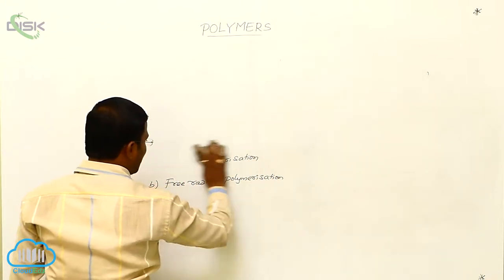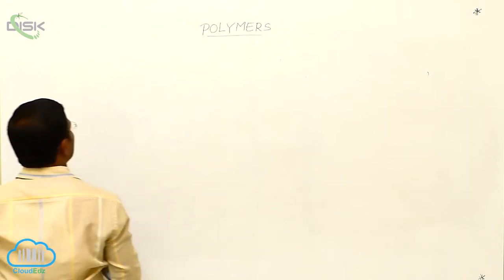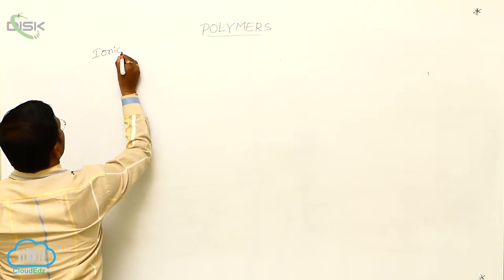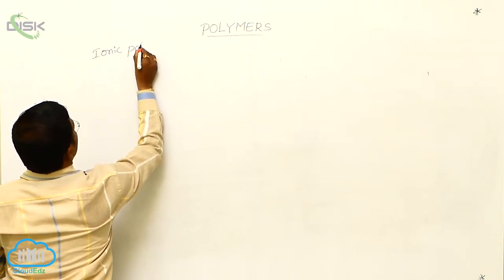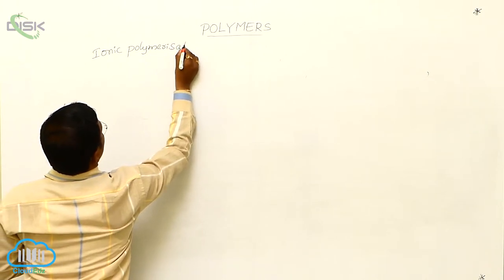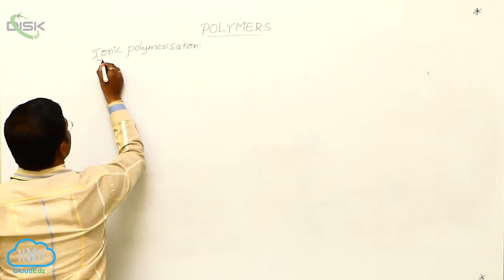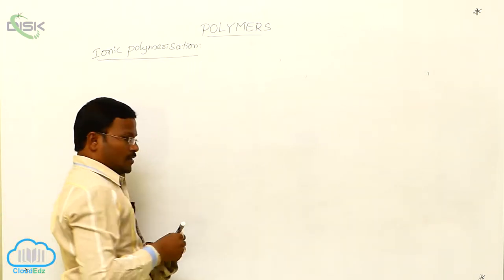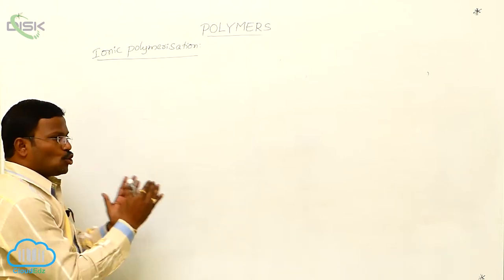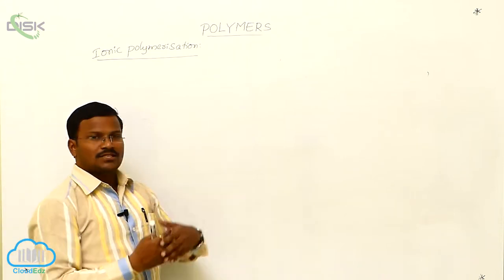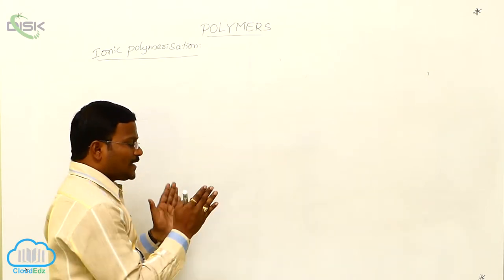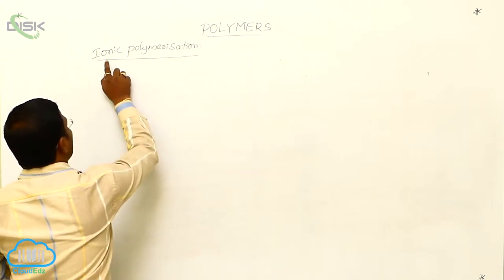The major heading for this topic is ionic polymerization. The name itself suggests that when one monomer reacts with another monomer, the resulting intermediates during the polymerization are ionic.